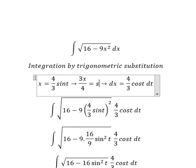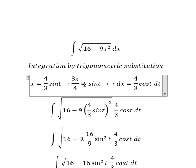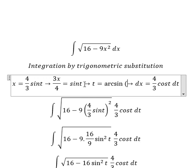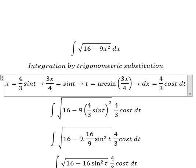And we have sine t. For t we have arcsine of this one, so we put this one to replace for t.